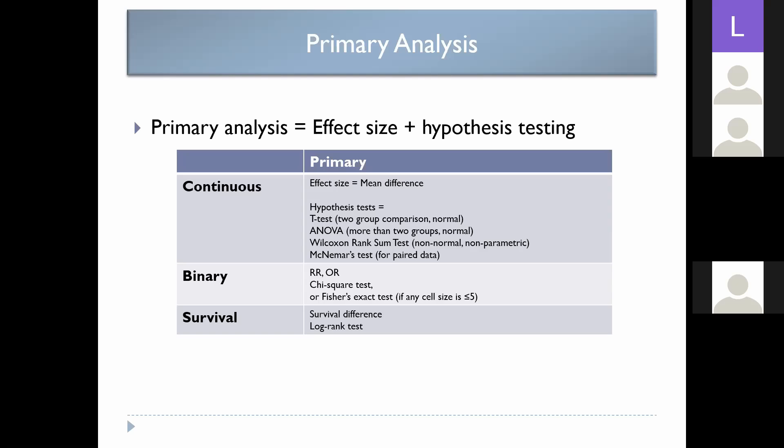For your binary outcome, you write that the primary outcome is your relative risk or your odds ratio — you can often describe both. Which one you choose depends on what kind of study you have: prospective analysis typically uses relative risk; retrospective case-control uses odds ratio; logistic regression gives you an odds ratio. You get both from your two-by-two table. The hypothesis test for binary outcomes is the chi-square test.